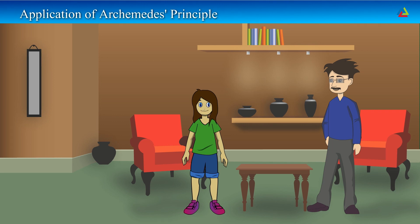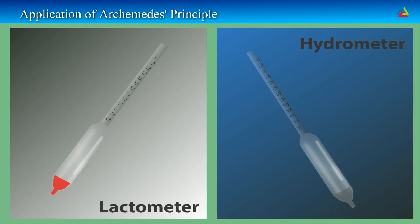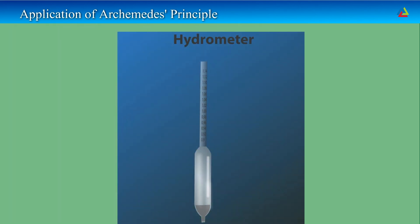Archimedes' principle has many applications. It is used in designing ships and submarines. Lactometers, which are used to determine the purity of a sample of milk, and hydrometers used for determining density of liquids are based on this principle. A hydrometer is made up of glass. It consists of two parts: stem and bulb.